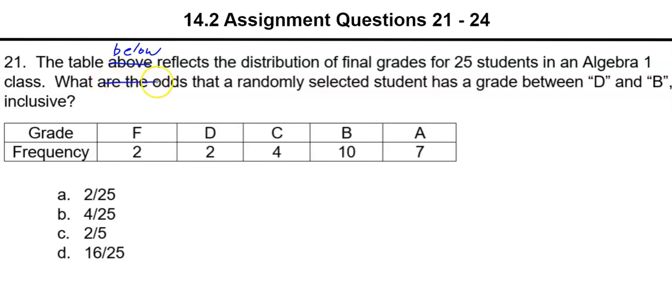So we don't want odds. Let's get rid of this. Odds is not what we're finding. We're finding probability. Probability and odds are calculated two different ways. So we are doing probability.